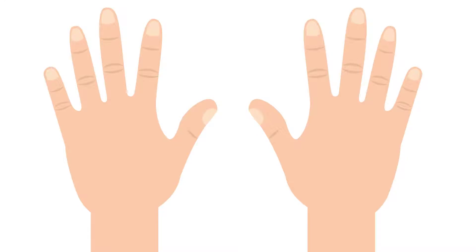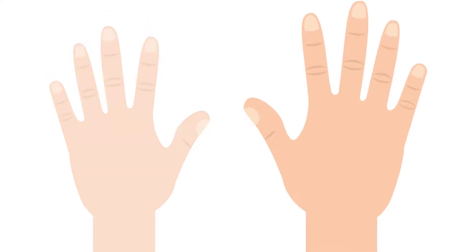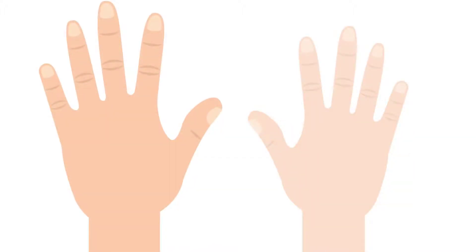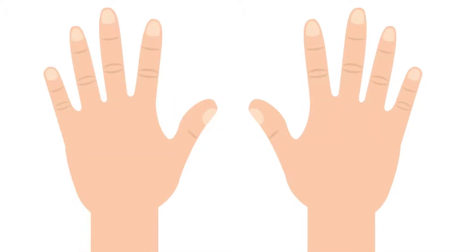First, make sure your hands are laid flat on a table, with your thumbs pointing towards each other. The fingers on the right represent the units, with the thumb representing the number 5. The fingers on the left hand represent the tens, with the thumb representing the number 50.